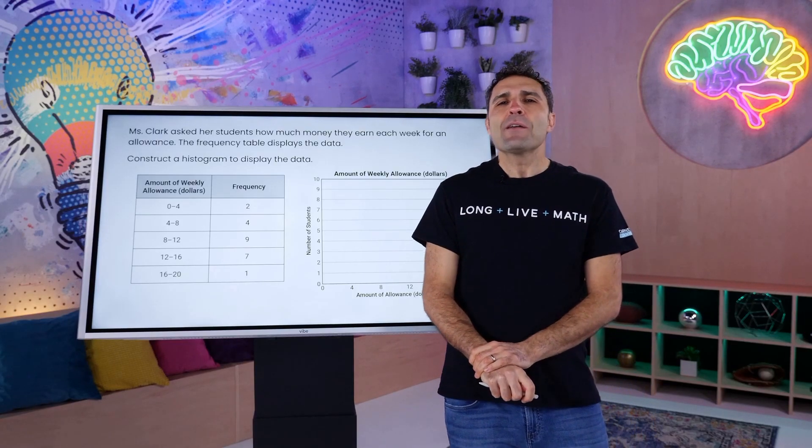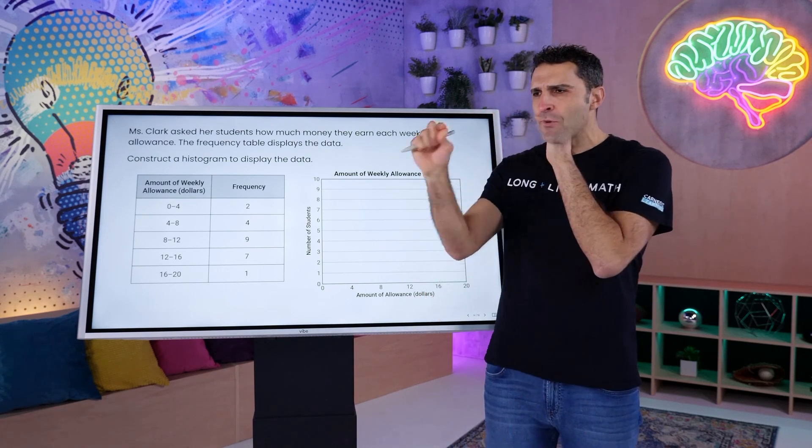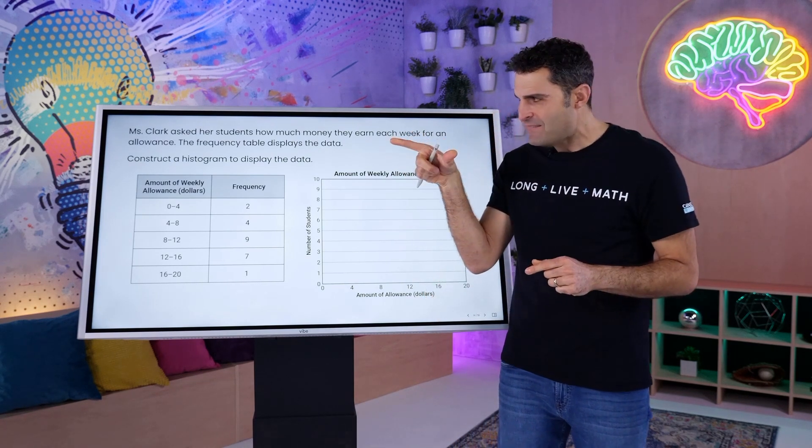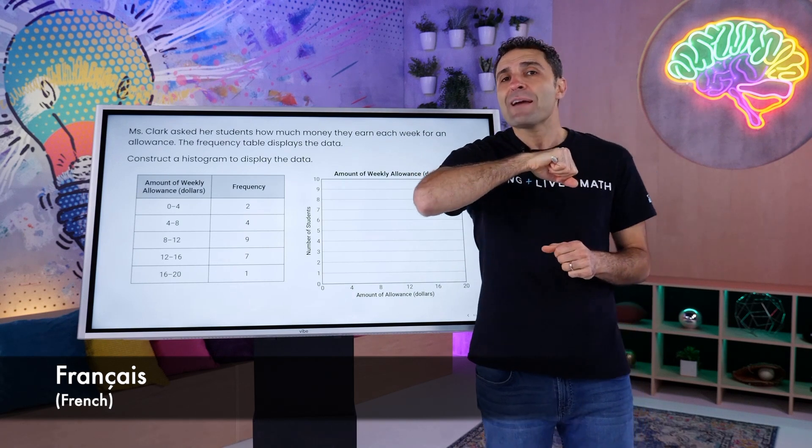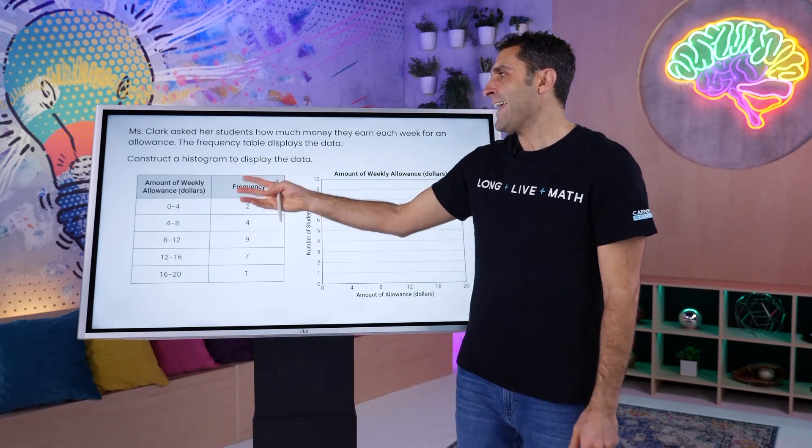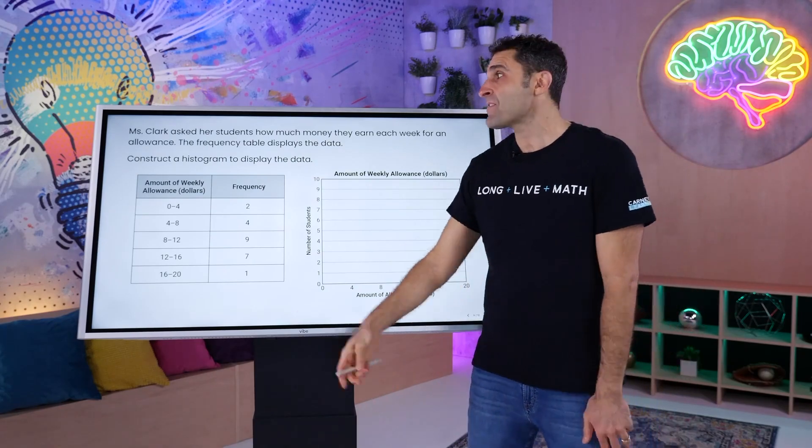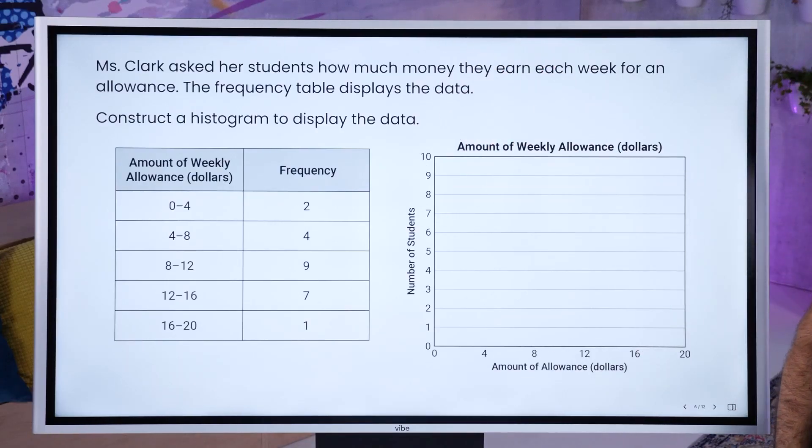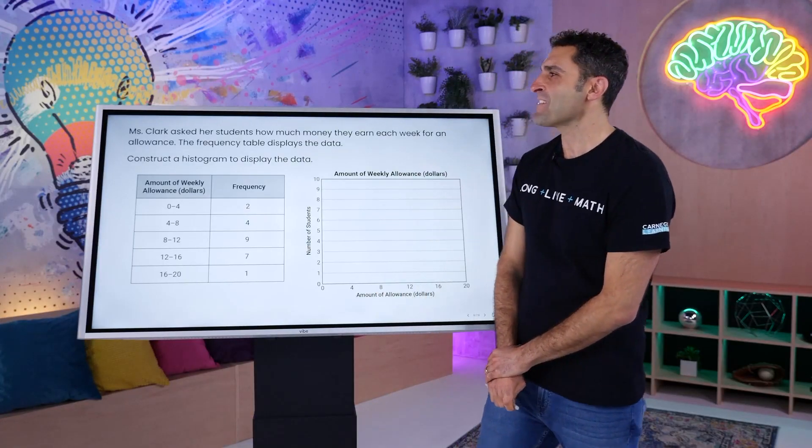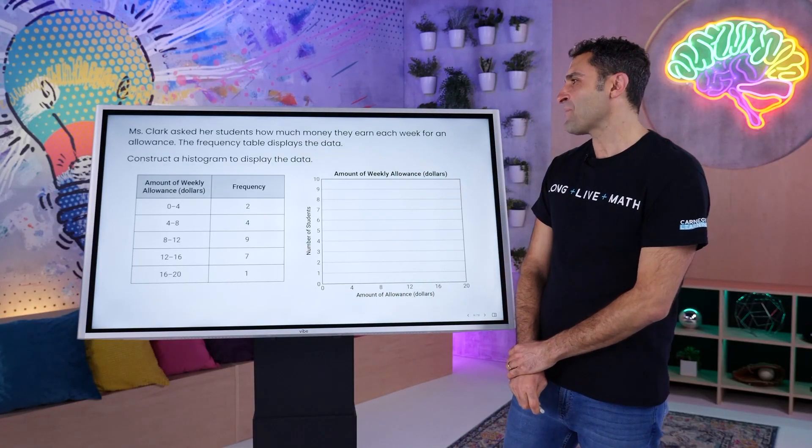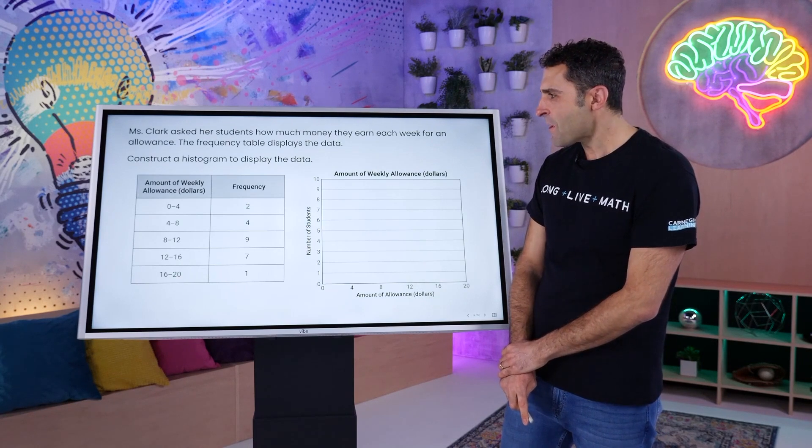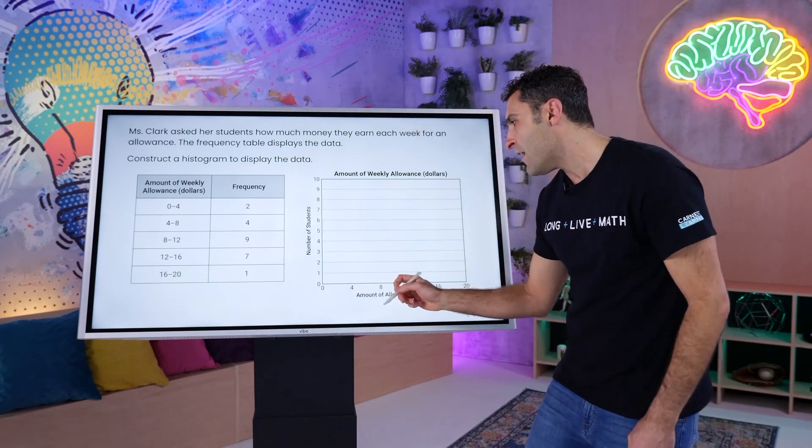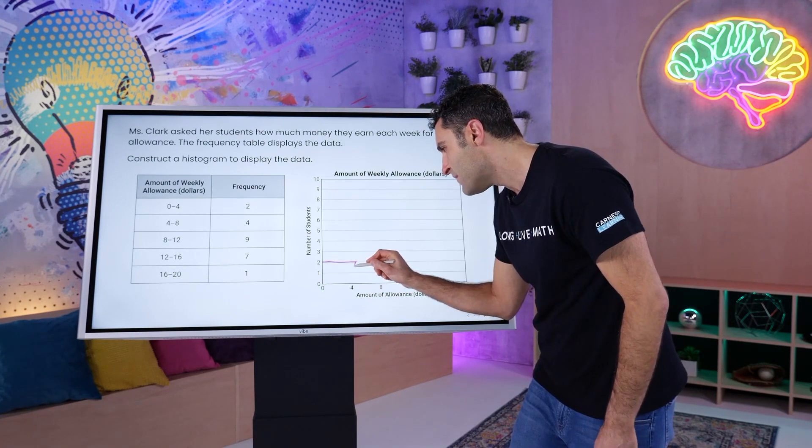Bienvenue de retour à la partie construction de données. Lisons à propos de Madame Clark et ensuite, nous allons construire un histogramme et parler de ce que cela signifie. Madame Clark a demandé à ses élèves combien d'argent ils gagnent chaque semaine pour une allocation. Le tableau de fréquence affiche les données. D'accord. Les enseignants construisent un histogramme pour afficher les données. Parlons-en. Lorsqu'on ajoute 2 à 0, combien obtient-on au total? Voilà.